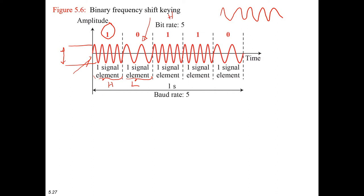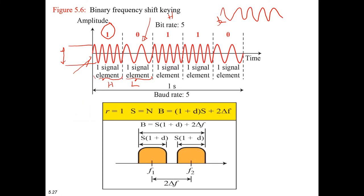As you can see, this signal has a high frequency and this one has a low frequency. One is represented by a high frequency and zero is represented by a low frequency. In binary frequency shift keying, we have two frequencies: f1 and f2, where 2 delta f represents the difference between these two different frequencies.